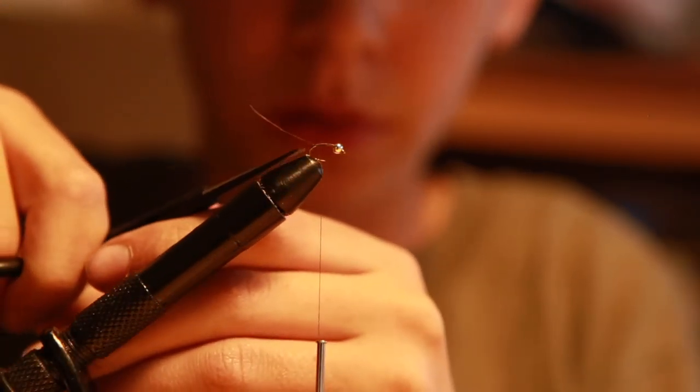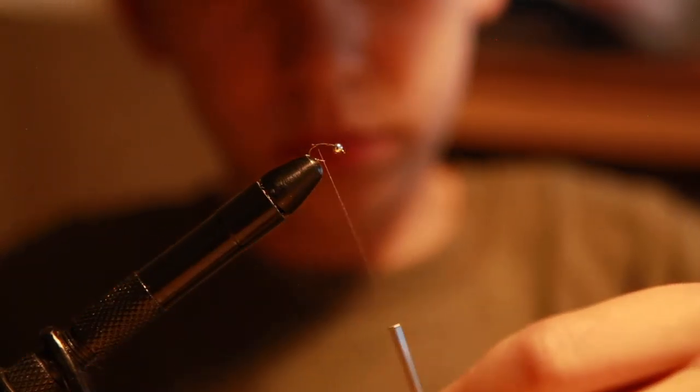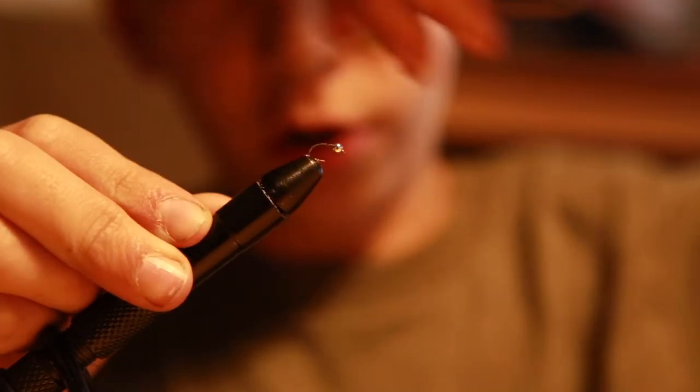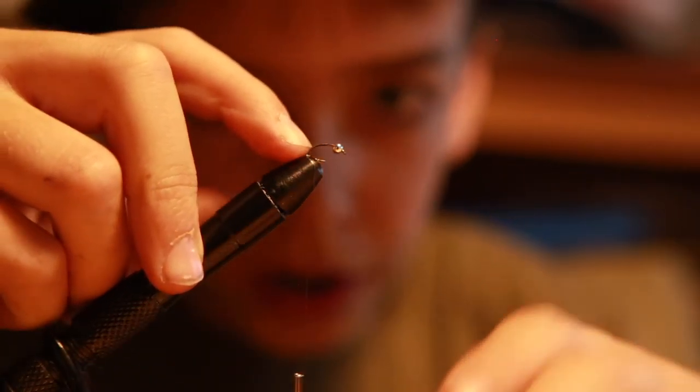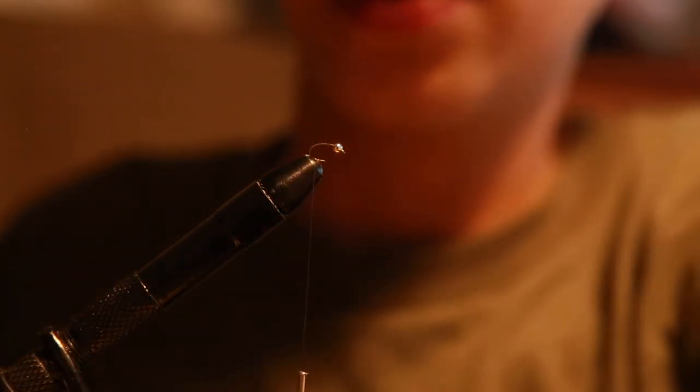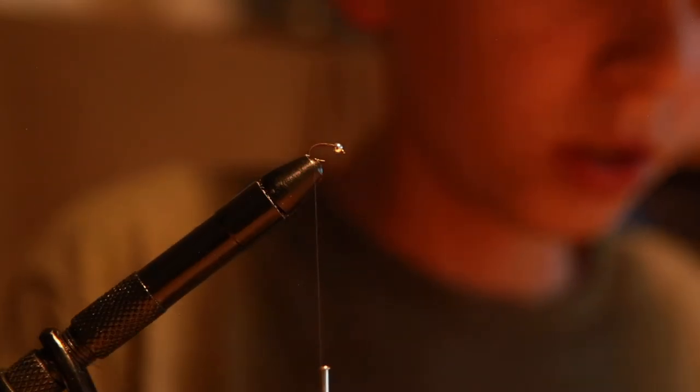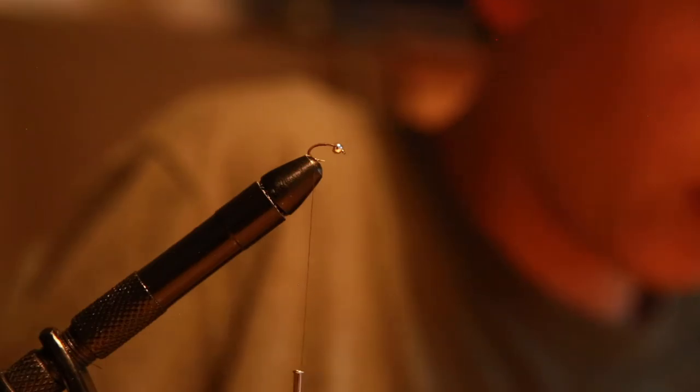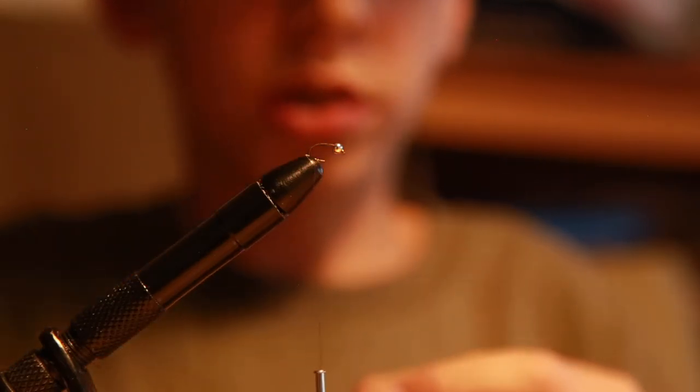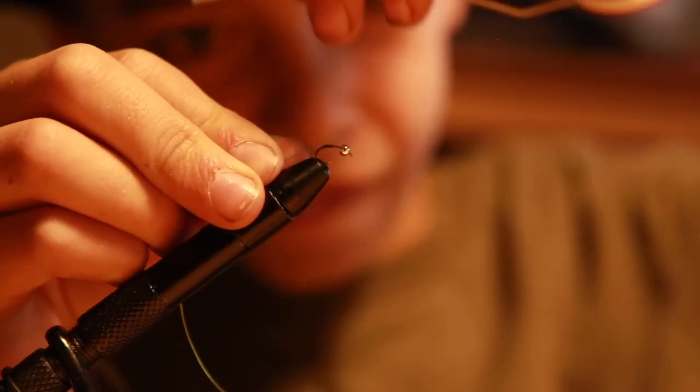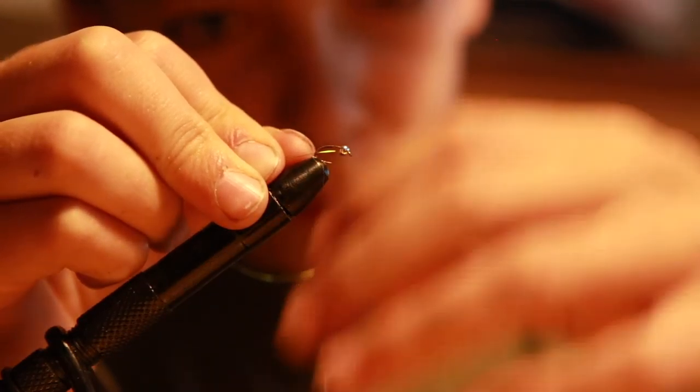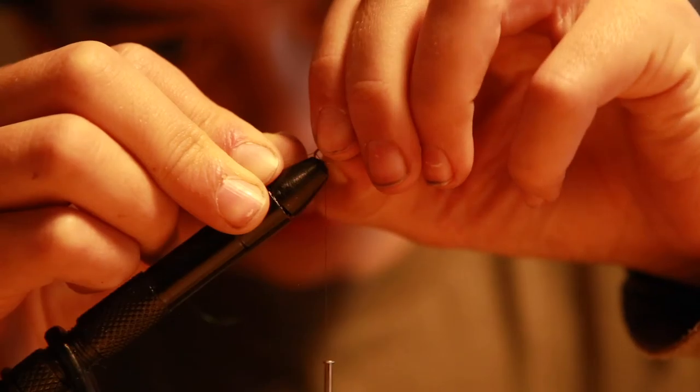I'm using a curved hook on this one. You have to on zebra midges. Wrap down until it starts to point downwards. I'm gonna get my small size wire. I'll use green. You can use a lot of different colors. You can use the classic copper, you can use silver. Most people use silver. I actually am a fan of the green wire color. Tie it in one wrap, then just like the brassie, slide it on top.